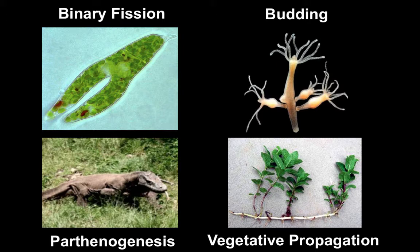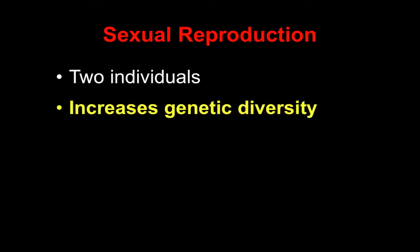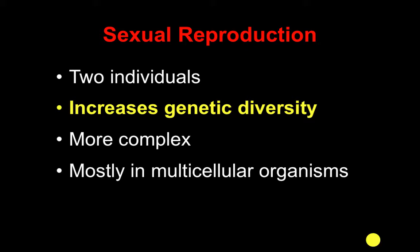Plants often do this. Sexual reproduction, on the other hand, requires two individuals and increases genetic diversity. It's more complex, but because we're taking and combining the genetic material from two individuals, we get that genetic diversity, which is so important for evolution. And as a result, this is mostly done in multicellular organisms.